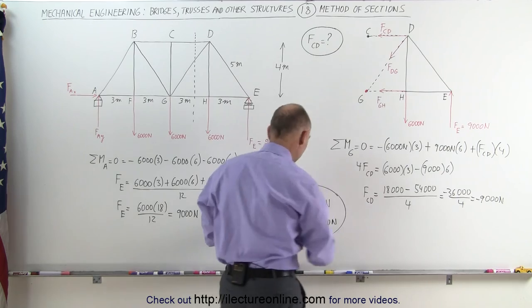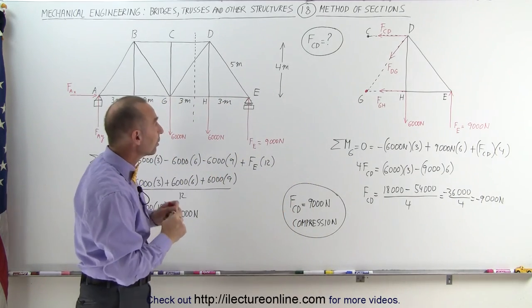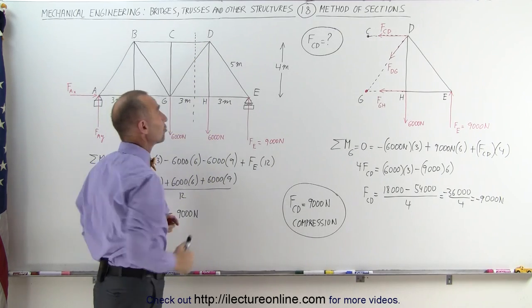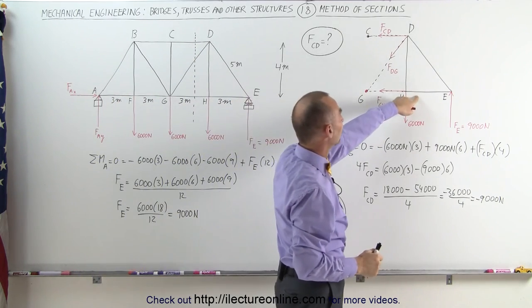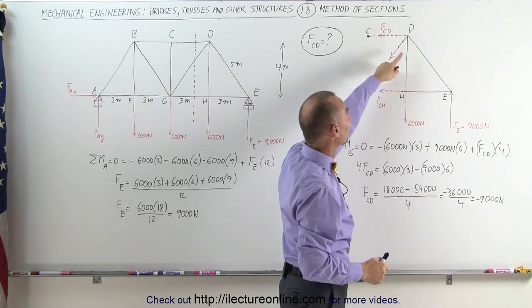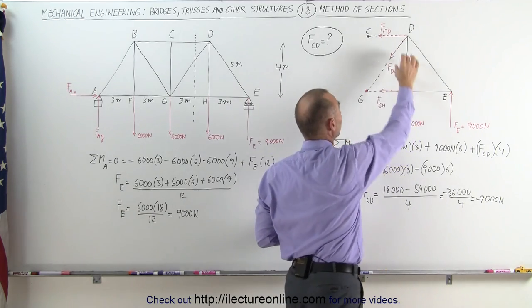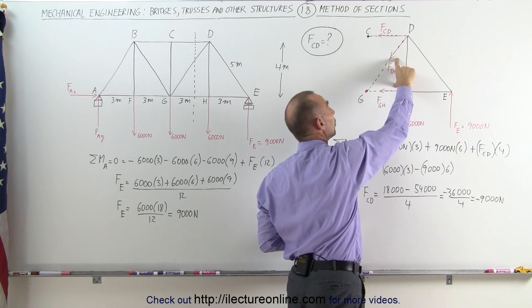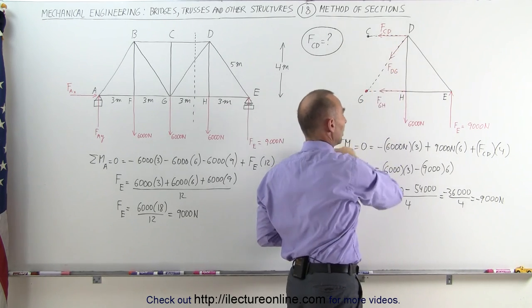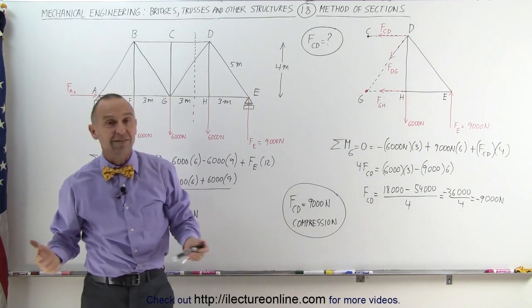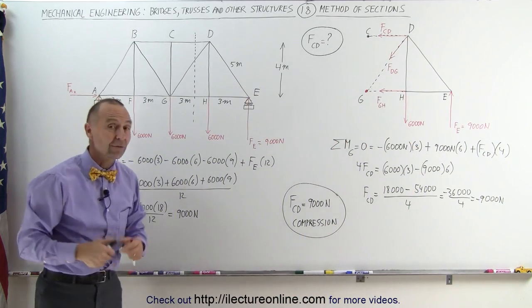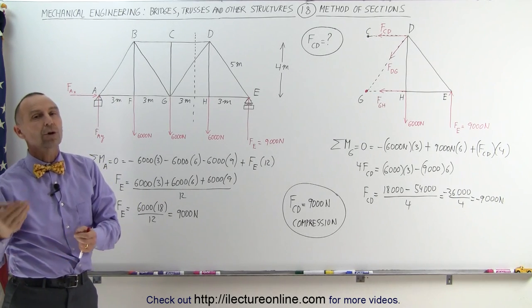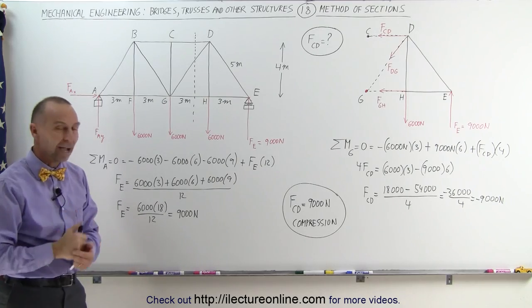And that's how you figure out the force on any member on the bridge. Simply cut off a section right through the member that you're trying to measure. You then draw the remnant of that section and all the forces emanating from the points, from the joints right there. Since you're looking for FCD, you put the pivot point there, eliminating those two unknowns, leaving you just with one unknown that you can solve using the sum of the moments. And that's how we use the method of sections to find the force on any member on a bridge or a structure, and know whether it's tension or a compression force. That's how it's done.